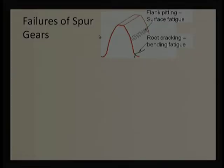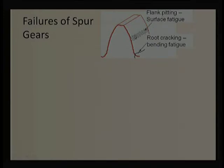Bending fatigue is more on the mechanical side where bulk properties are used, while in surface fatigue we use only the surface properties. There are two most common failure mechanisms: root cracking, which is bending fatigue caused by tensile stresses, and flank pitting, which is surface fatigue caused by compressive loading.